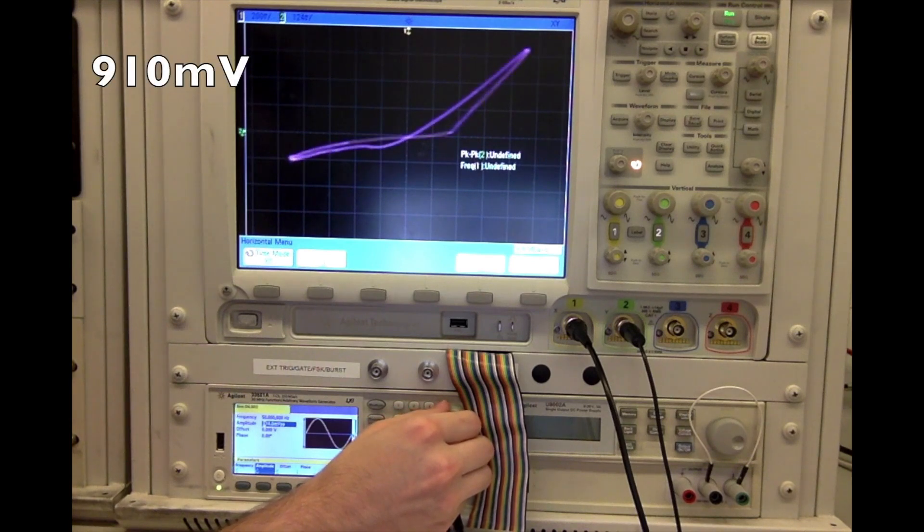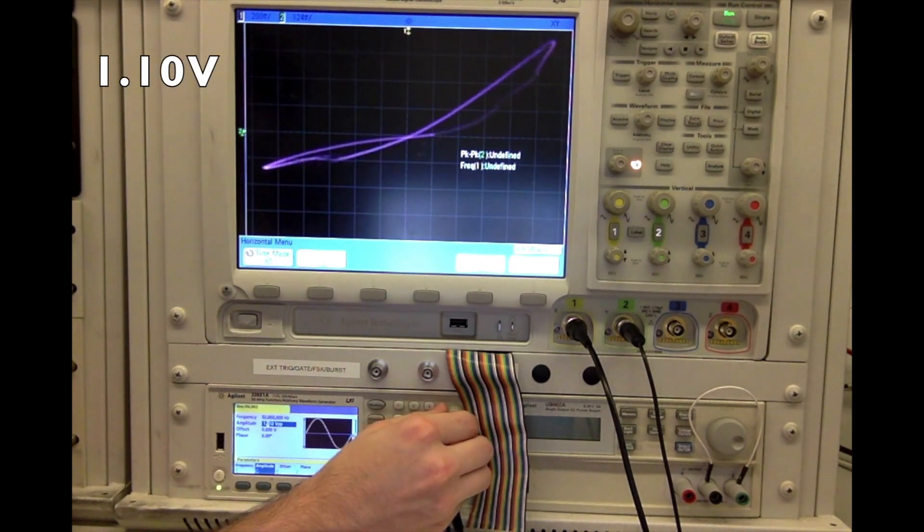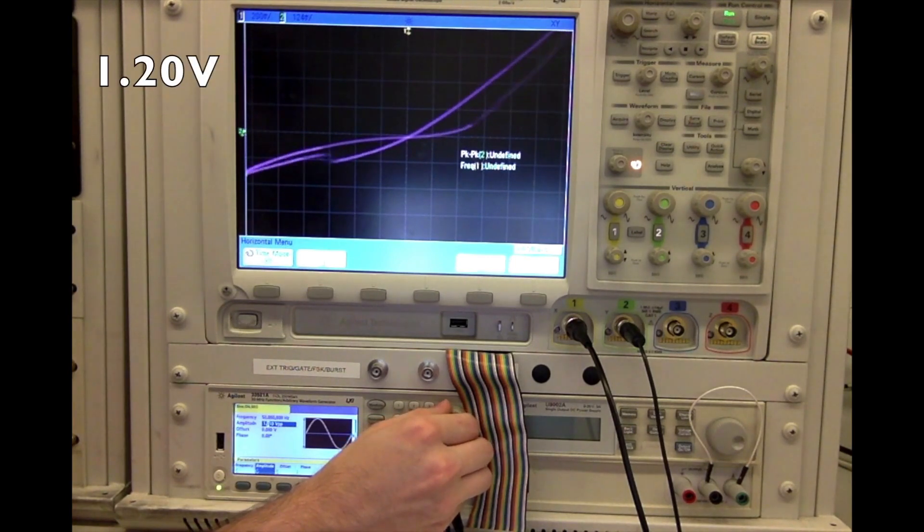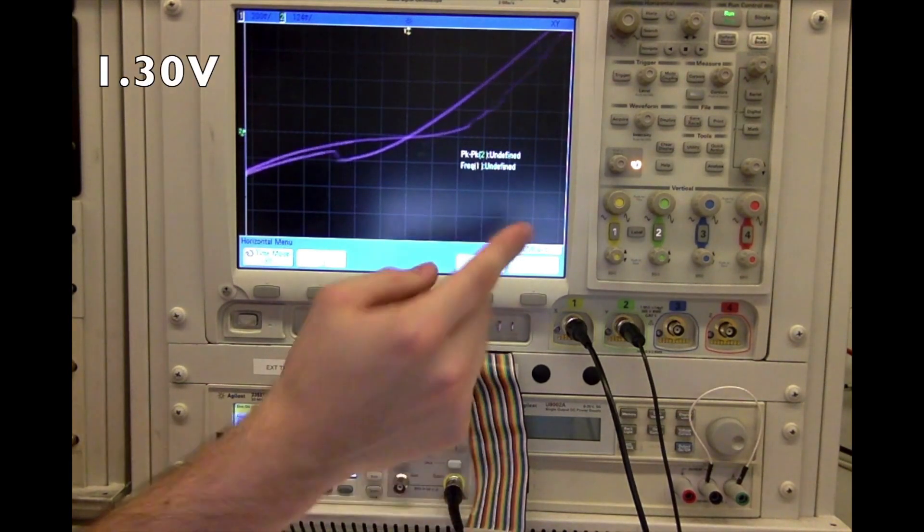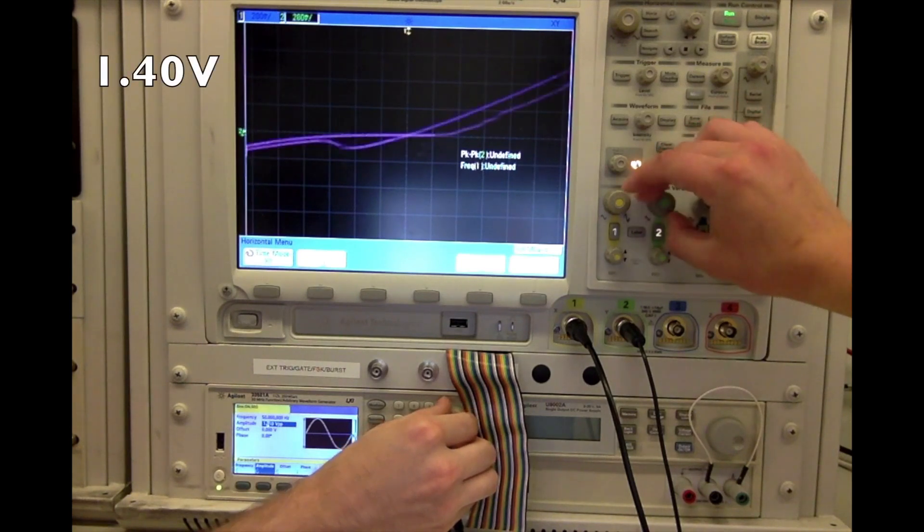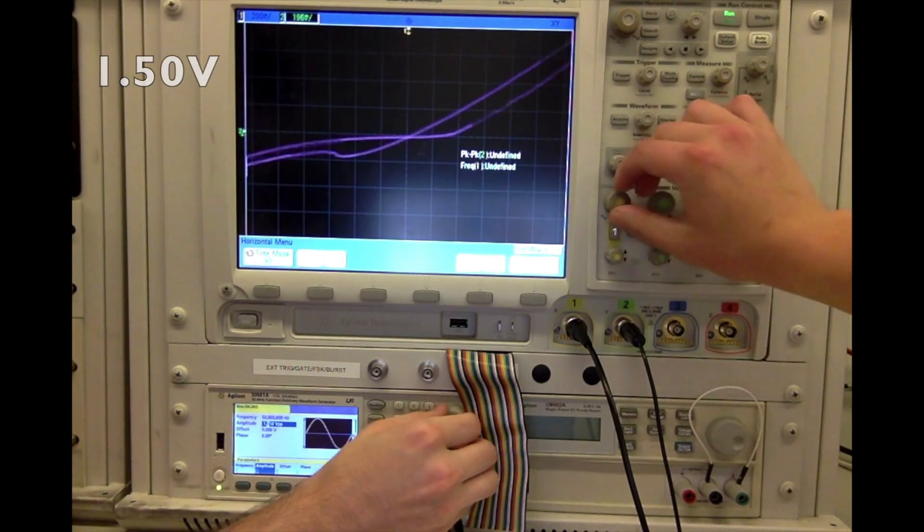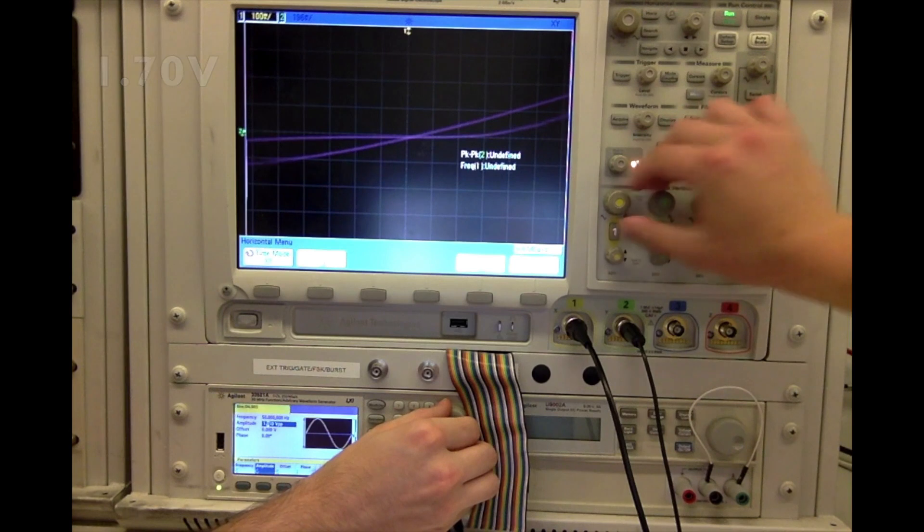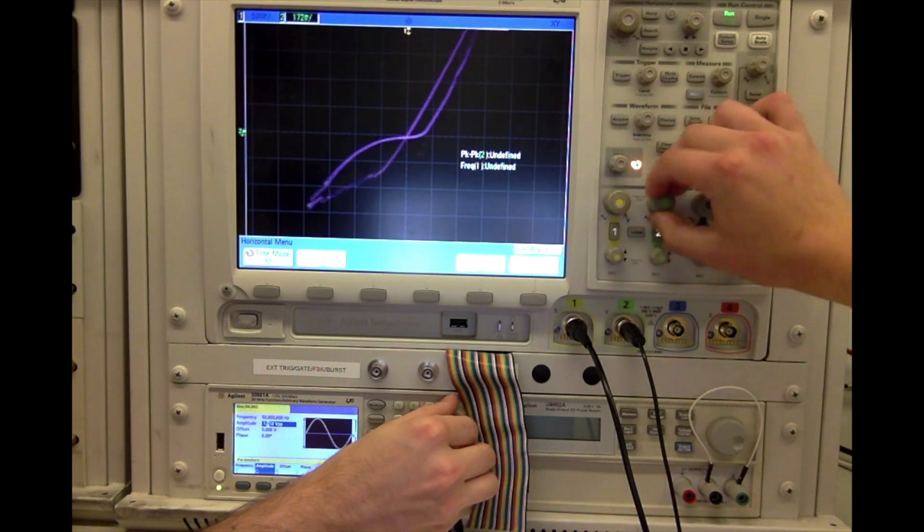So, 900 millivolts, 1.1 volt, 1.2, 1.3, and we're just going to drive it home, get a nice solid loop.